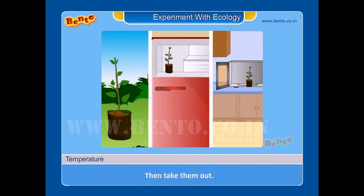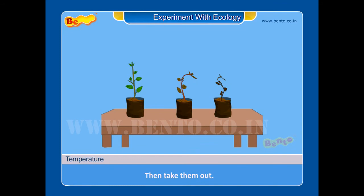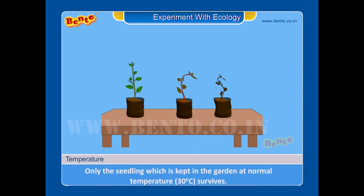Step 5: Then take them out and observe what happens. Result: Only the seedling which is kept in the garden at normal temperature, 30 degree Celsius, survives.